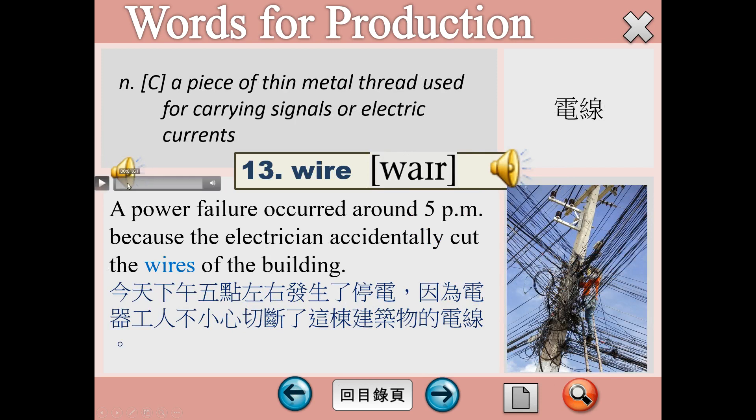關於電線的例句：A power failure occurred around 5 p.m. because the electrician accidentally cut the wires of the building. 句子一開始的power failure指的就是停電的狀況。